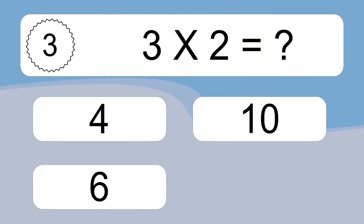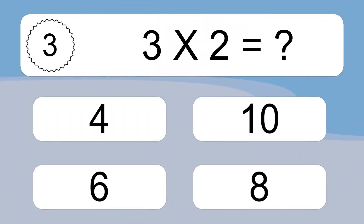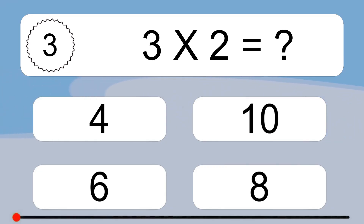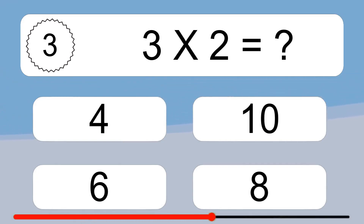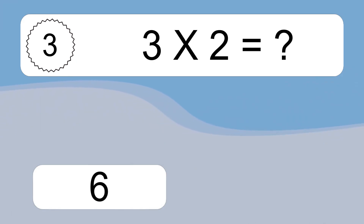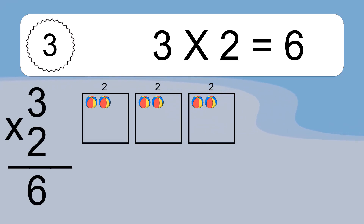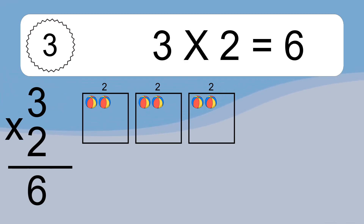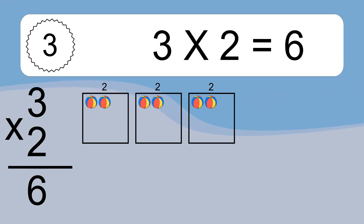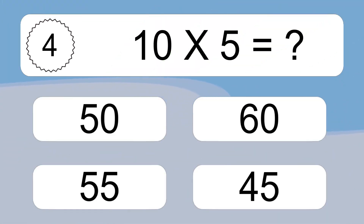3 times 2 equals what? We have 3 boxes and each box has 2 colorful balls inside. If you count all the balls in all the boxes together, you will have 3 times 2 balls. This equals 6 balls. 10 times 5 equals what?